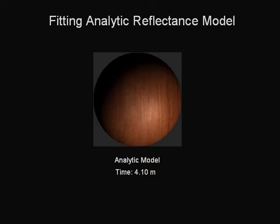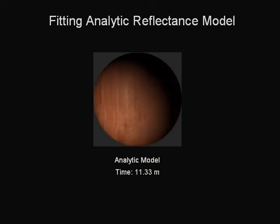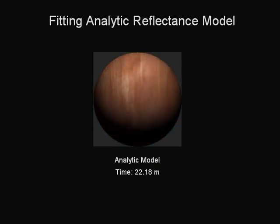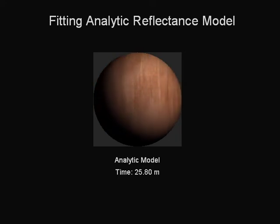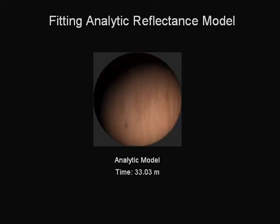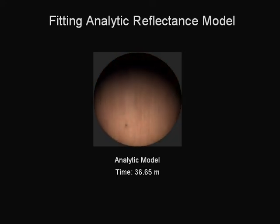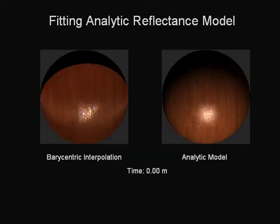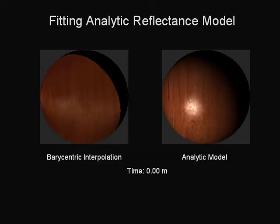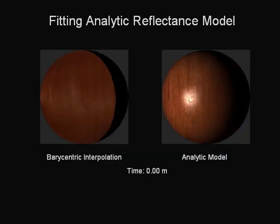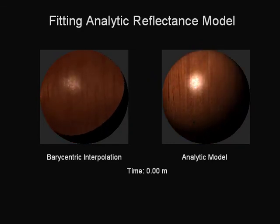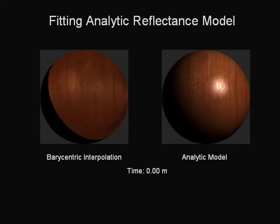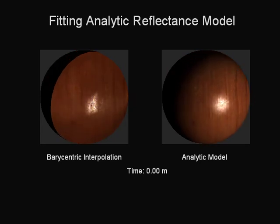We then fit an analytic Torrance-Sparrow BRDF model at each spatial location and time instance. We can texture map these results onto 3D objects such as the spheres shown here. Here we freeze time at equals zero to show the artifacts with barycentric interpolation in the highlight and boundary of the image. As can be seen, the analytic model is higher quality and without artifacts.